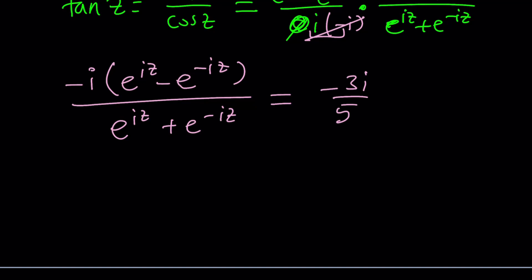Some people say, oh, it takes the principal value, so on and so forth. Anyways, don't worry too much about it. Let's just go ahead and enjoy the journey. Now, what are we going to do? We can cancel out the negative i from both sides, so we can end up with a rational number. Beautiful.